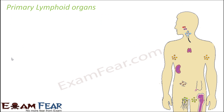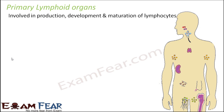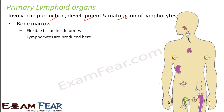Let us start with the primary lymphoid organs: bone marrow and thymus. These organs are involved in the production, development, and maturation of lymphocytes — lymphocytes take birth in the primary lymphoid organs, become mature, and get ready to fight the infection. Bone marrow is a flexible tissue inside bones and is the site of production, or the site of birth, of lymphocytes.